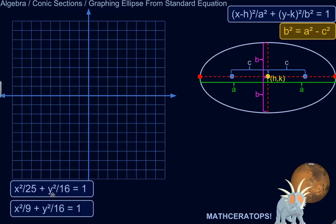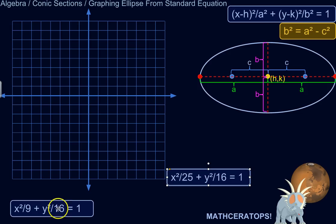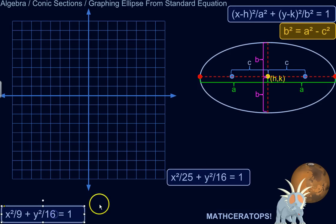All right, in this lesson we're going to graph a fairly straightforward ellipse. It's nice because it's going to be centered on the origin, so that sort of simplifies things a little bit. So let's graph this one.